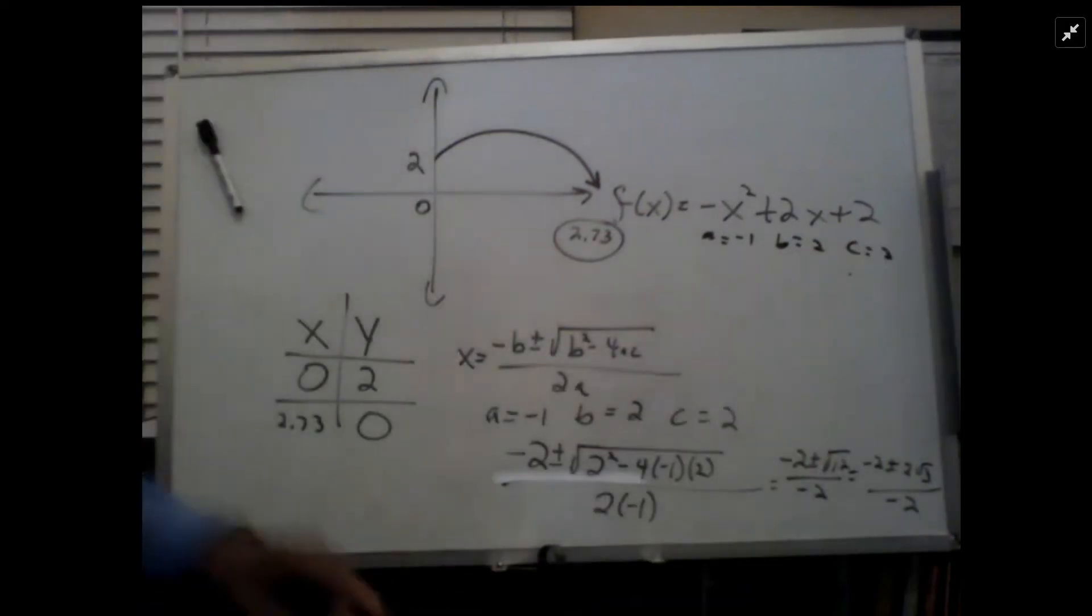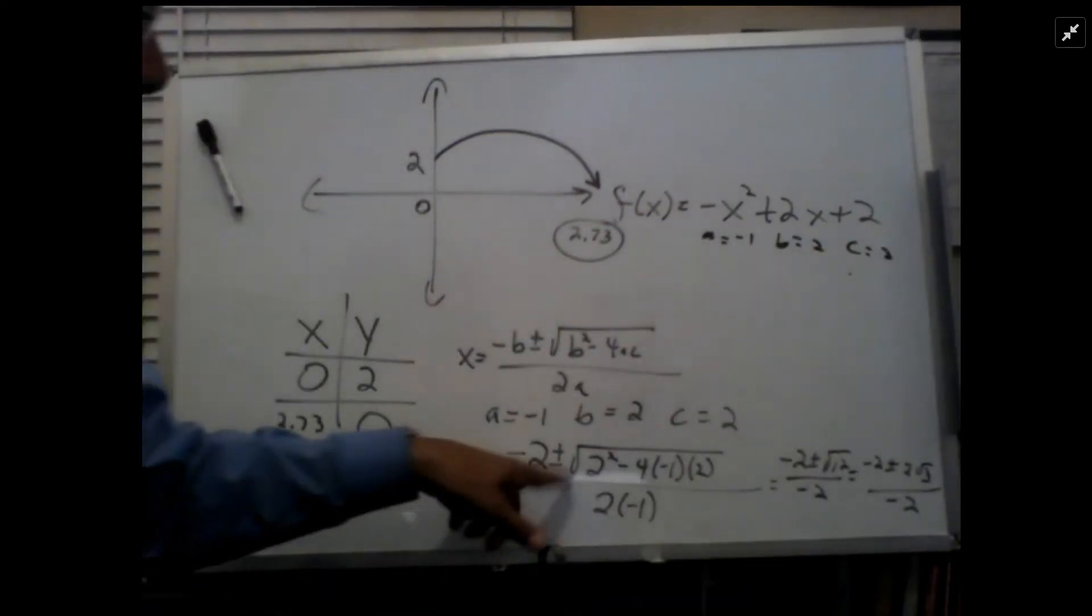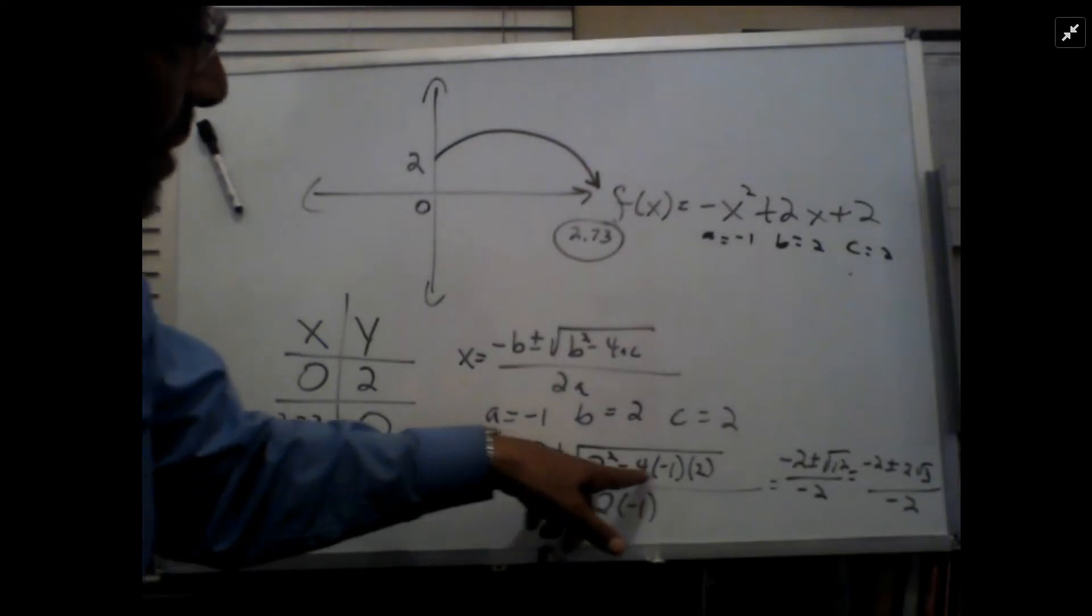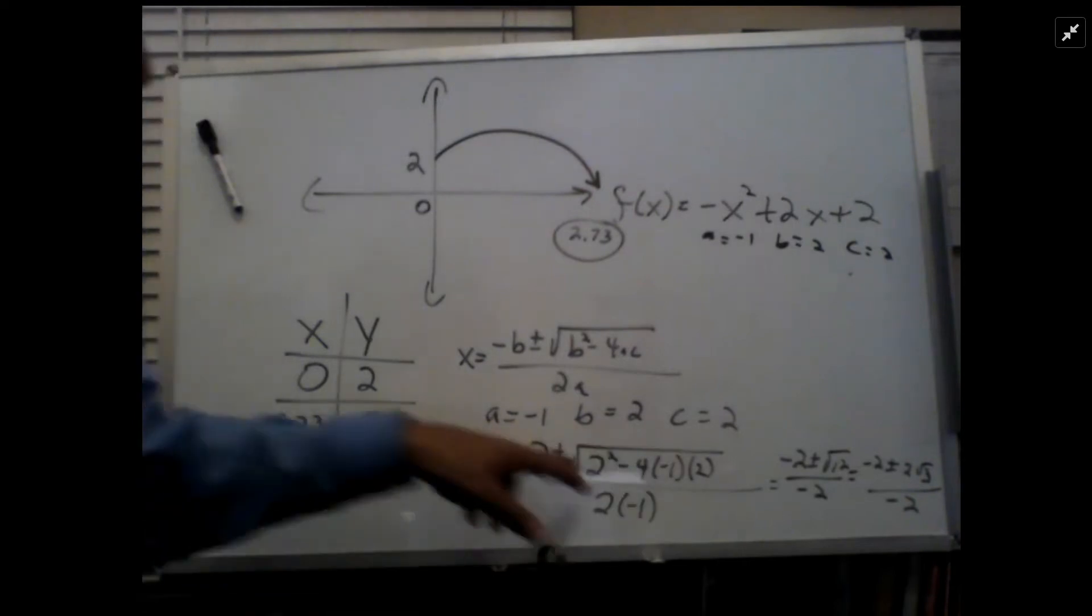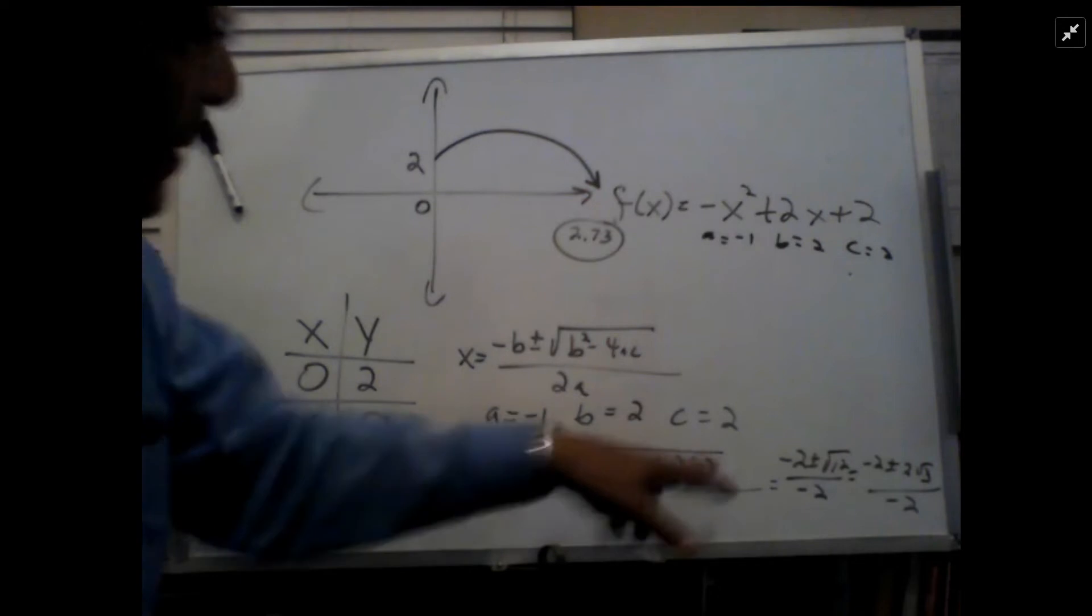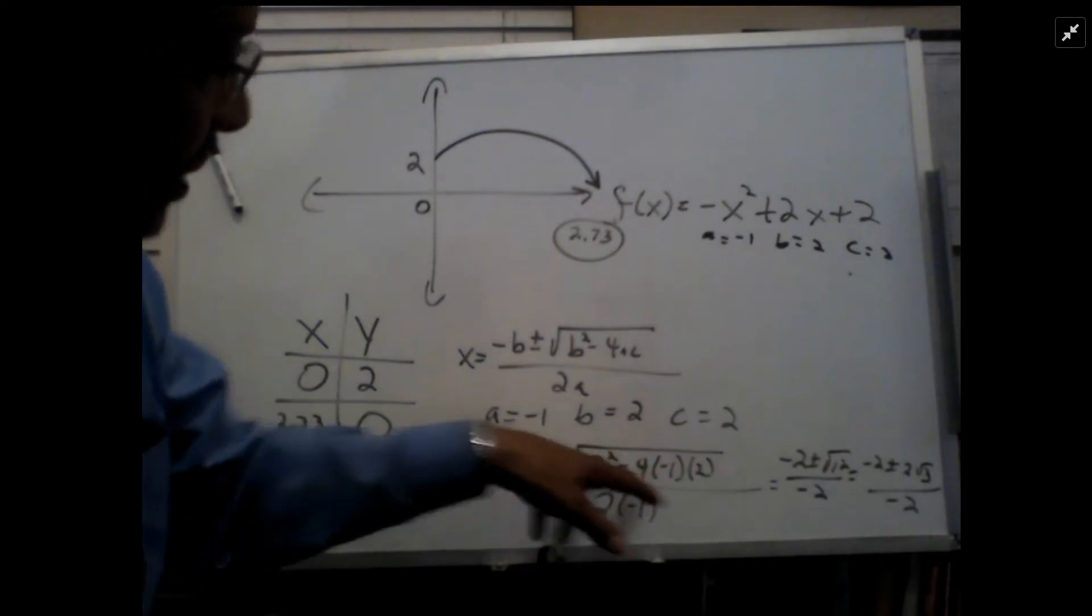So it sets up as negative 2 plus minus square root of 2 squared minus 4 times negative 1 times 2, which ends up being 4 plus 8, which is 12.